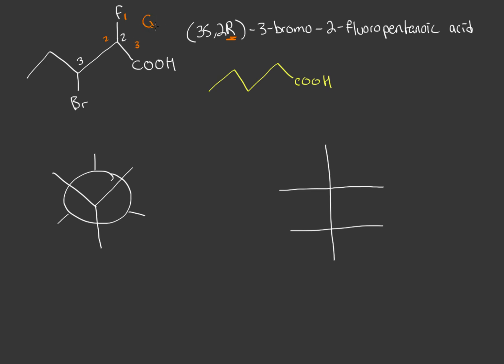That's an S spin. So that must mean the hydrogen is actually pointing out towards us, because if the hydrogen is pointing out towards us, that flips the stereochemistry when it's spinning that way — giving us the R configuration.